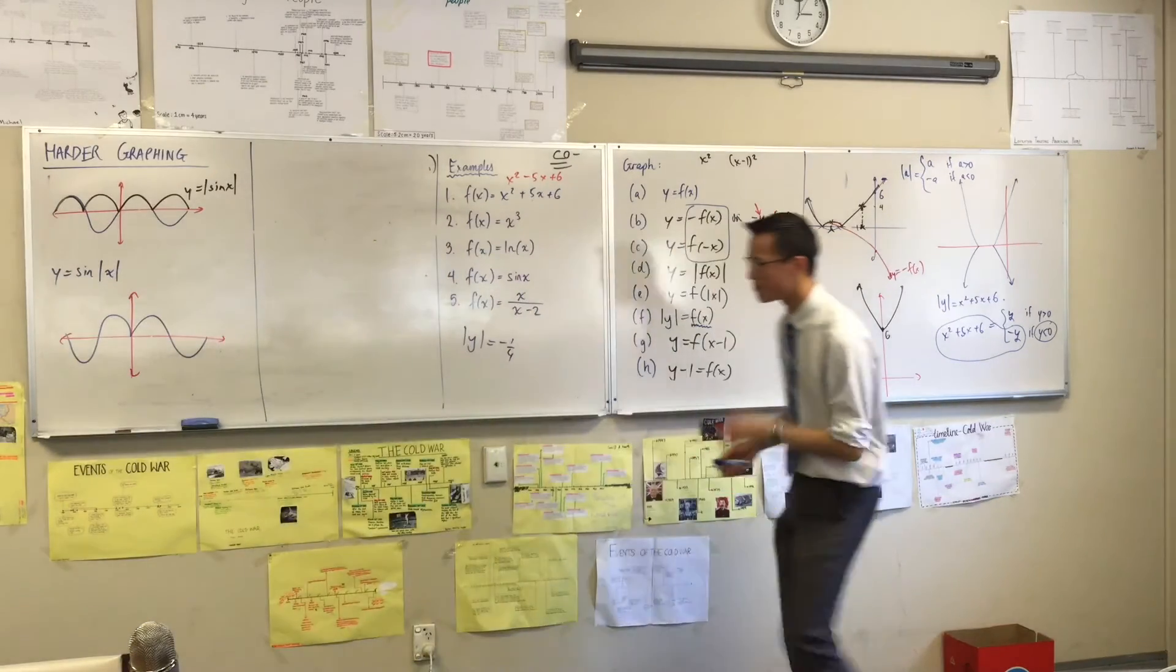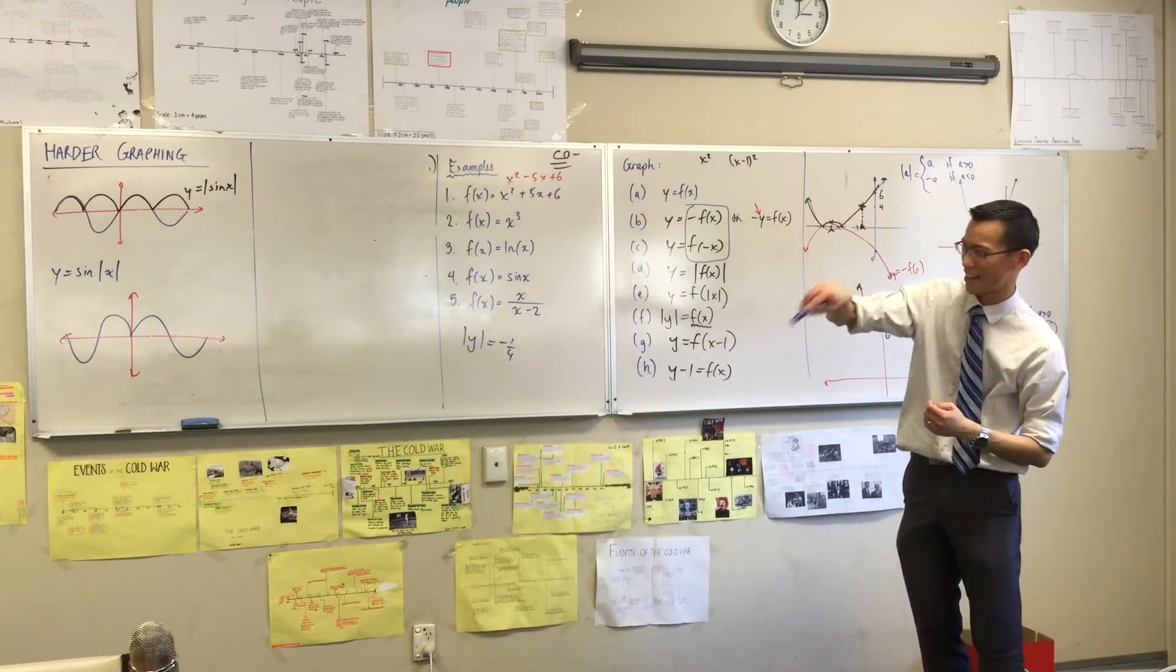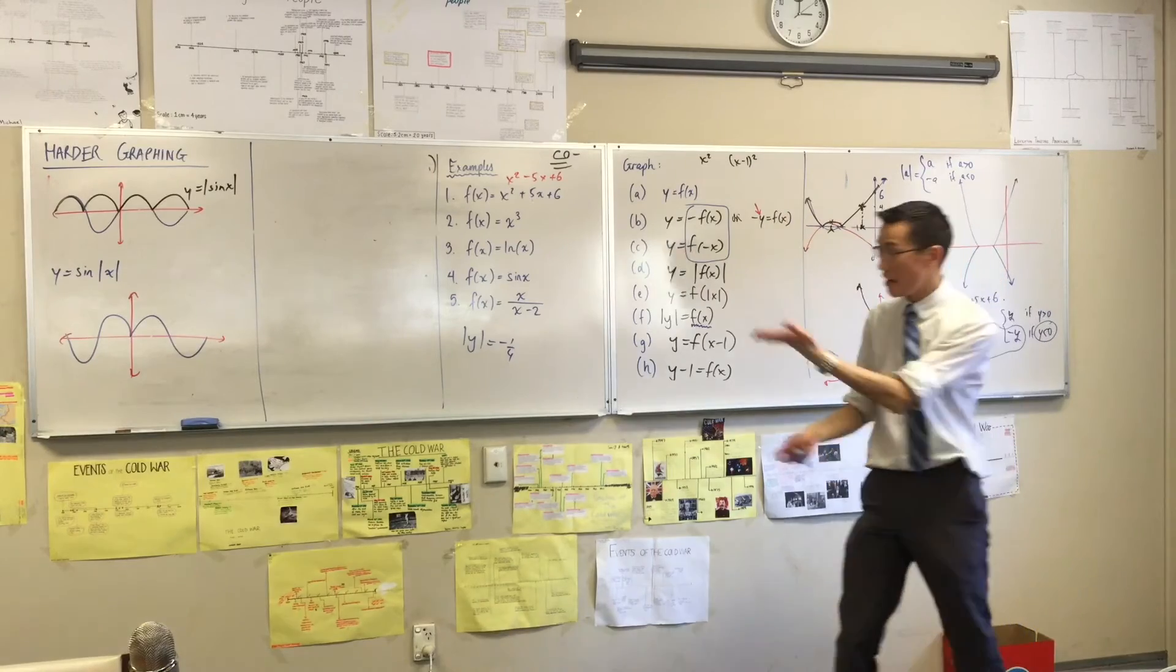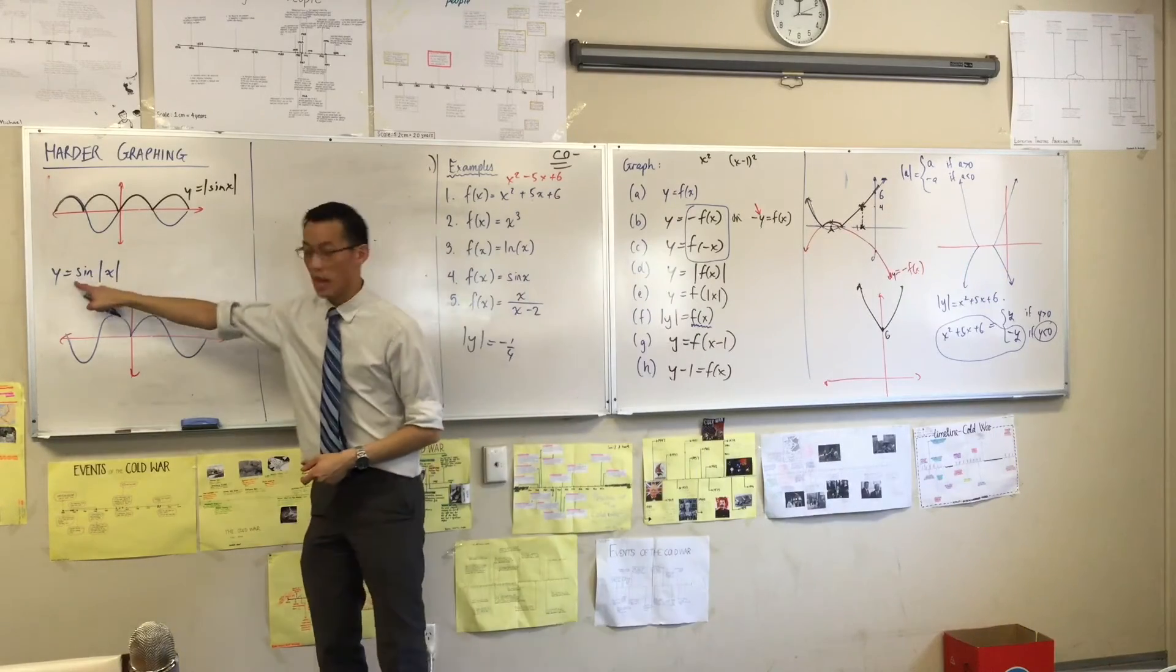Not bad. That's not bad. I'm not used to drawing sine curves in that direction, so it's a little bit funny. There you go. What is this? This is the sine of the absolute value of x.